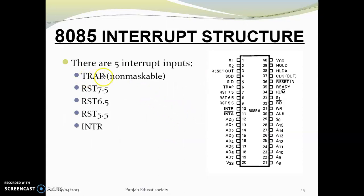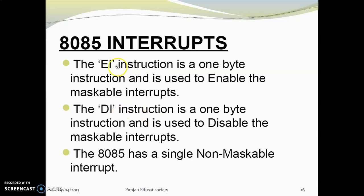The 8085 interrupts include TRAP, RST7.5, and RST. TRAP is due to monitoring and will go to its routine. There are two signals: EI and DI. We can use enable and disable instructions to interrupt using mask and non-mask signals.